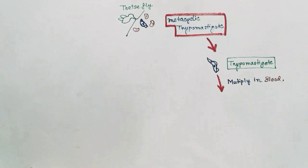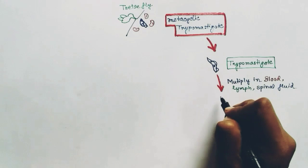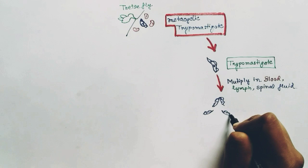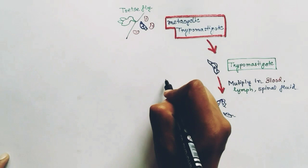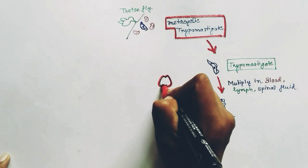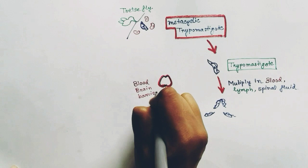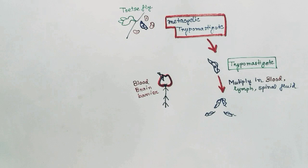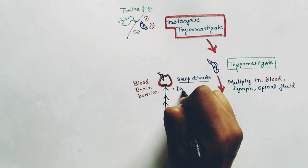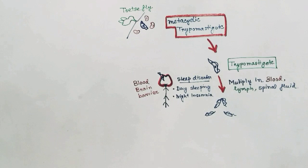The trypomastigote undergoes multiplication in the blood and lymph, and later in the spinal fluid, dividing to form many trypomastigotes in the body fluids. In the later stage it can reach the CNS, crossing the blood-brain barrier and reaching the spinal fluid. When it does so, it causes sleeping disorders.